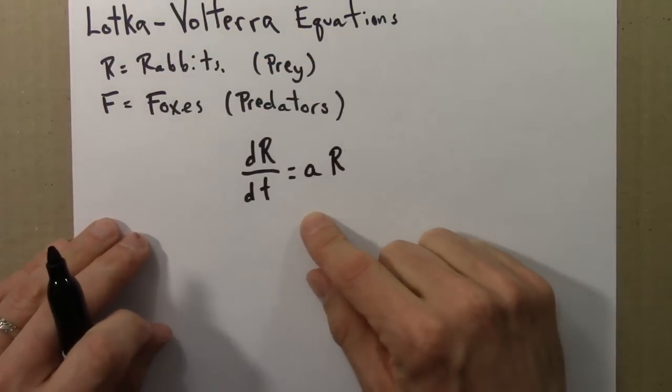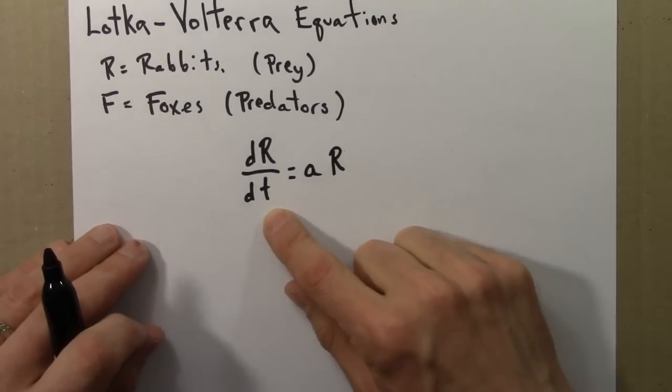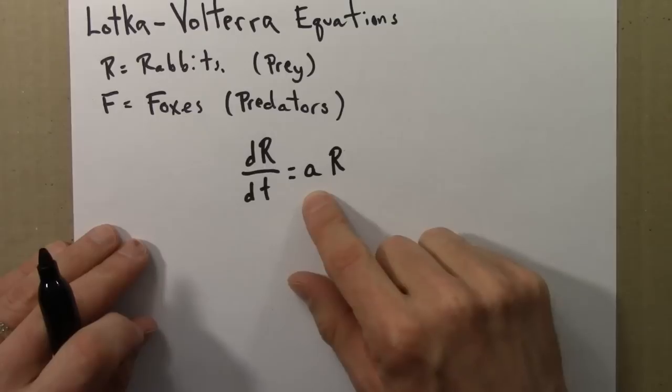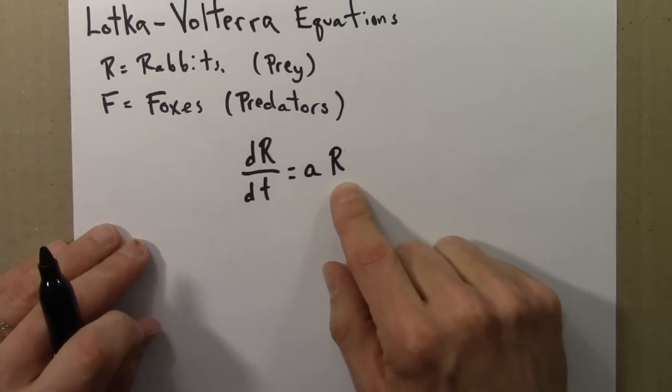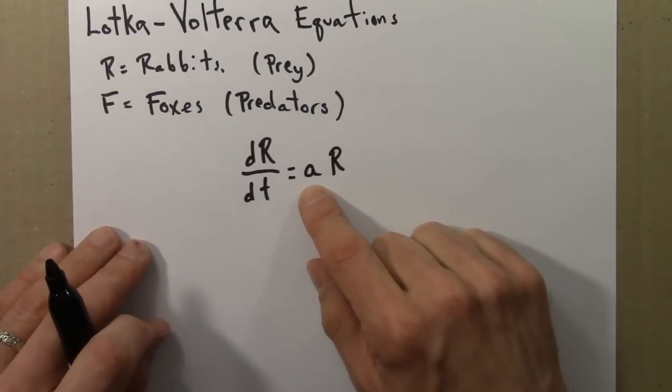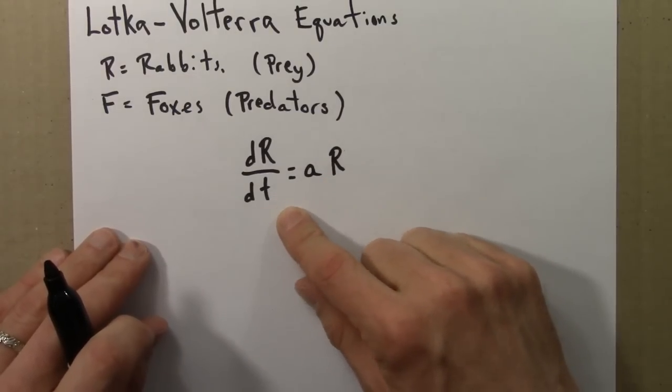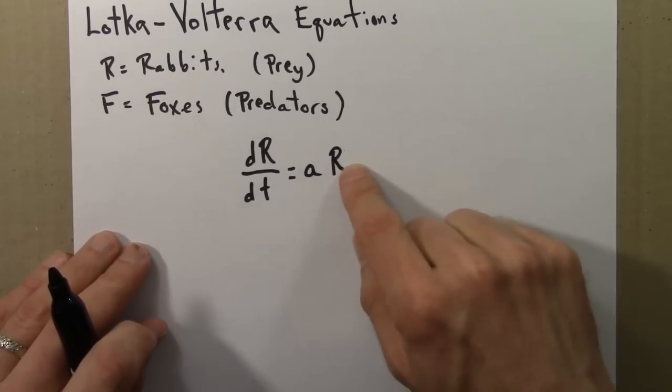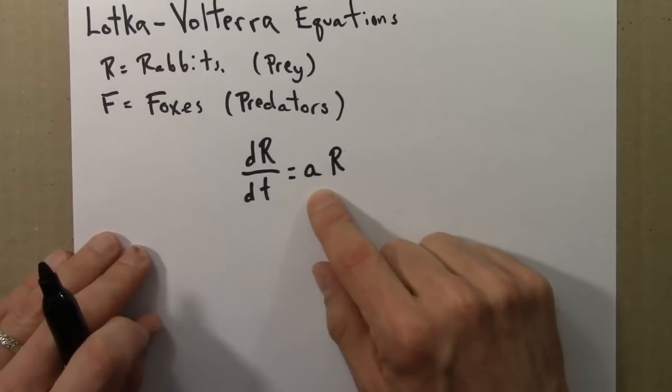We could start with a population model like this. This says that dR/dt, that's the growth rate of the rabbits, is a function of just the number of rabbits there are. It's some constant times the number of rabbits. For a positive, the growth rate is always positive. The more rabbits there are, the faster the growth rate is, and so on. This leads to exponential growth. The solution to this differential equation is an exponential function.